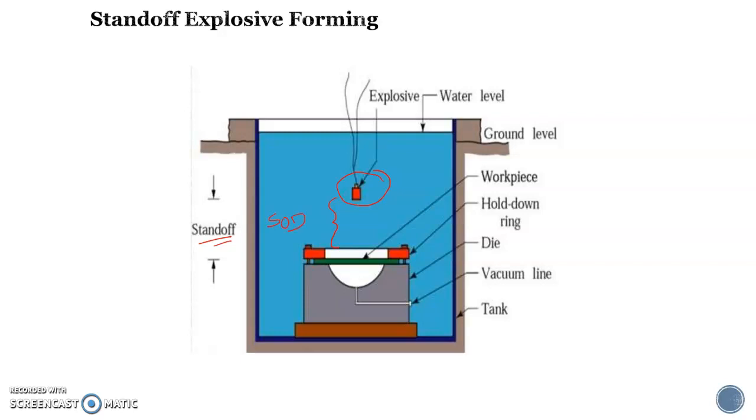The workpiece is placed over a die, and the bottom portion of the die chamber is evacuated with a vacuum pump. The vacuum is created to form the workpiece close to the die chamber and to avoid air entrapping between the workpiece and the die cavity.